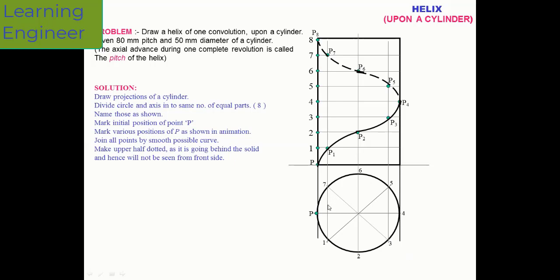To summarize: first draw the circle and divide it into eight equal parts. The distance between the circle and rectangle can be 10mm or 15mm; draw a horizontal line and project all points onto it. The vertical height of the rectangle is 80mm. Project all points from the circle vertically, and divide this vertical line into eight equal parts — the same number as the circle divisions. Wherever the horizontal from point one and vertical from point one intersect gives P1; horizontal from two and vertical from two gives P2, and similarly up to P8. Join all points with a French curve — half as a continuous line and half as a hidden line.